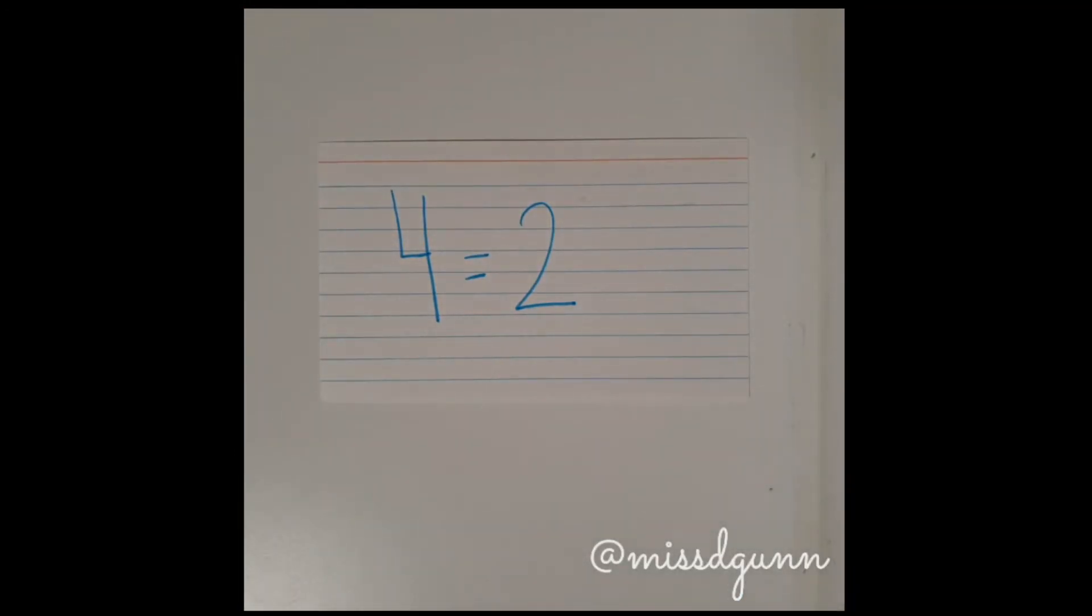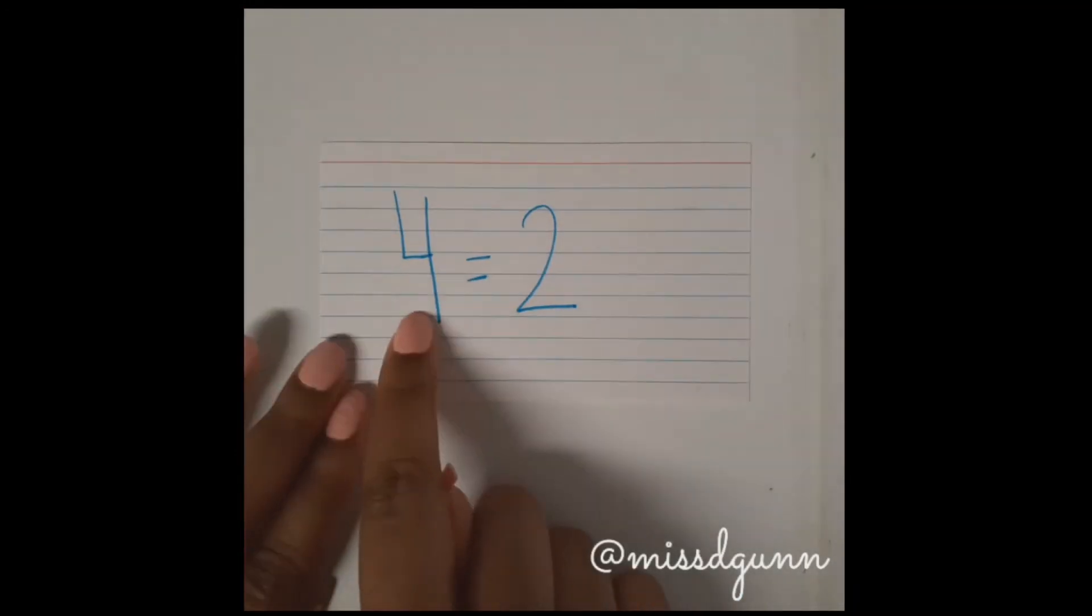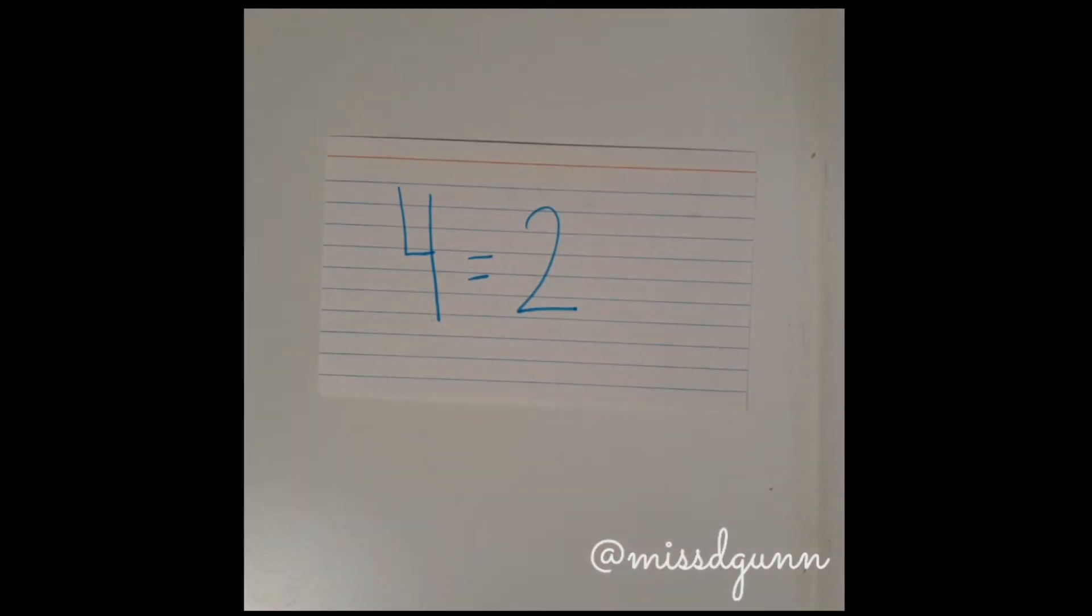For level one, you are teaching them that both sides are equal when there is a whole number on either side of the equal sign.